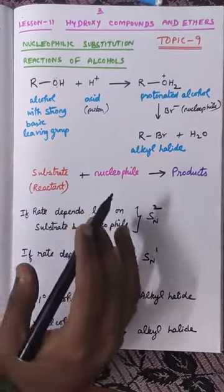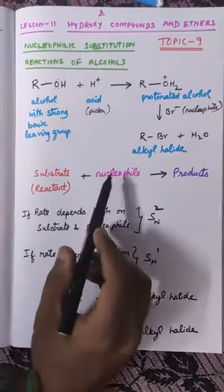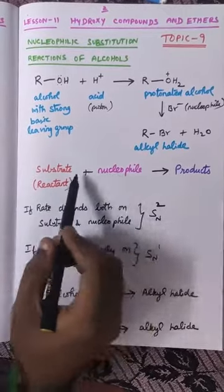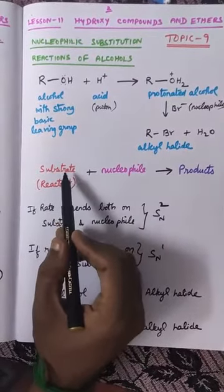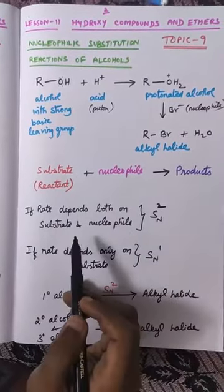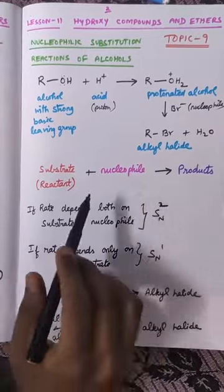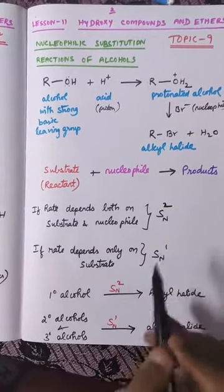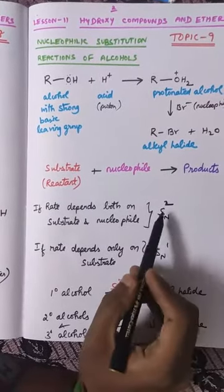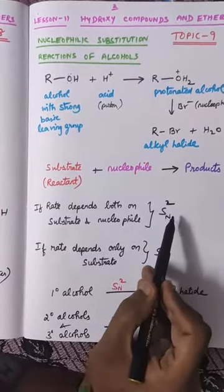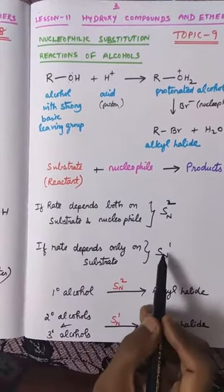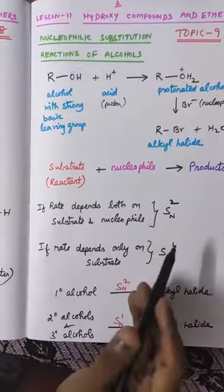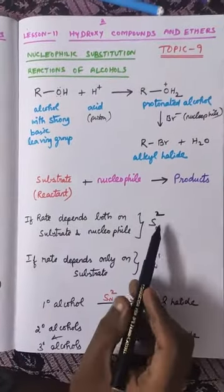In general organic reactions we have two important species: one is the substrate, also called the reactant, and another one is the nucleophile. When the nucleophile attacks the substrate it gives the product. Based on this, nucleophilic substitution reactions are classified into two types: SN2 reaction and SN1 reaction. SN2 is bimolecular nucleophilic substitution; SN1 is unimolecular nucleophilic substitution.